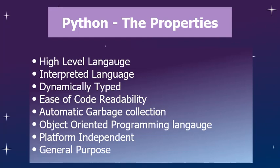The next point is dynamically typed. When you define a variable in Python, its type is not fixed. We have lots of data types in every language. In languages like Java, C, or C++, when you create a variable, you define the data type, the variable name, and then its value. But in Python, you just need to create a variable name and its value — you don't need to specify the data type.